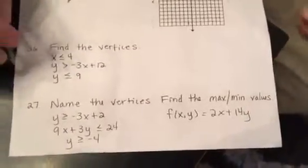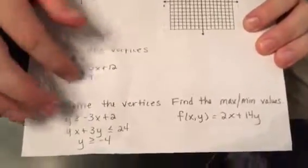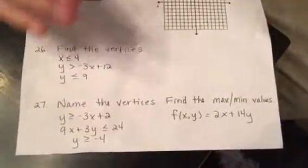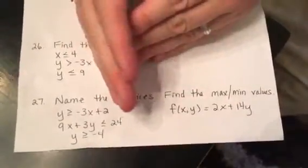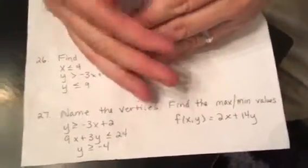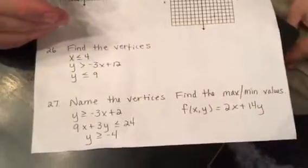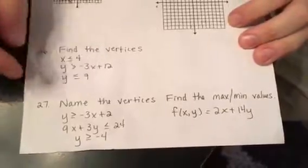These down here at the bottom, these are the linear programming ones. So on this where it says find the vertices, you graph all three of these and it's going to make, because there's three of them, a triangular section. So you find each intersection, each corner of that, that's one of the vertices. Find those by finding the intersections on the calculator or going through and solving each system.